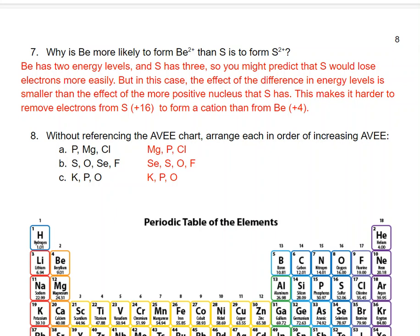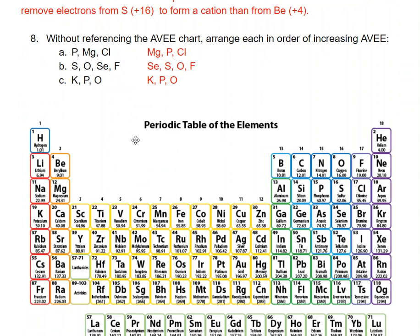Without referencing the AVEE chart, arrange the following in order of increasing AVEE. Understanding the layout of the periodic table is important here. For magnesium, phosphorus, and chlorine — those all have the same energy level, so the difference in AVEE must be due to the charge of their nucleus.